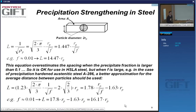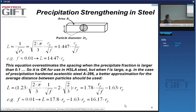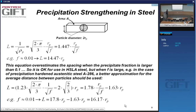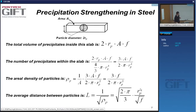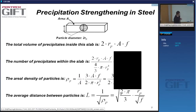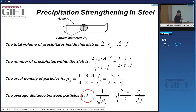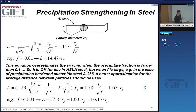I haven't put up the final version of the slides for the precipitation strengthening on E-Class. But anyway, some slides I amended. One of them is the relation between the spacing between the particles, their radius, and their volume fraction. That's a very useful relation to use in practice.